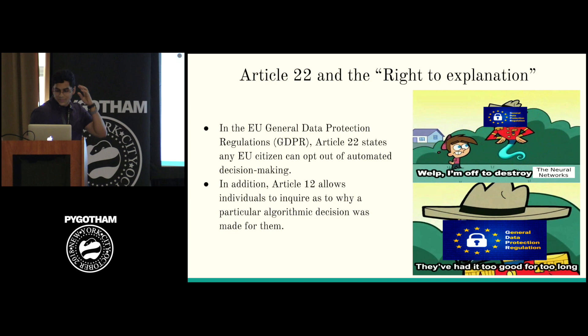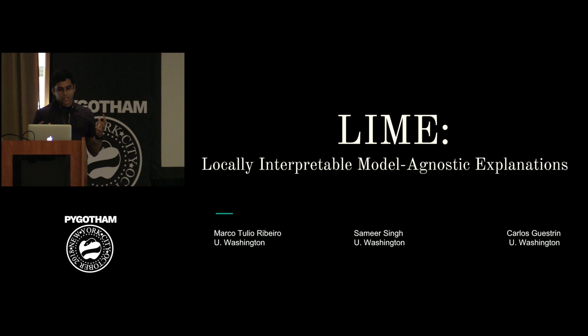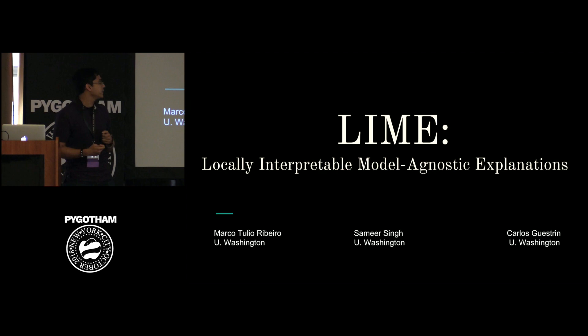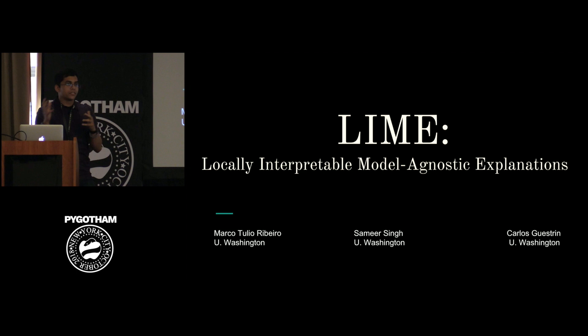The first algorithm I'm going to talk about is called LIME. It was published in 2016 by three researchers at the University of Washington. LIME is sort of the de facto tool for model interpretability right now. It works with any model — that's the model-agnostic part. It basically comes up with explanations of why the model did something for a particular data point.